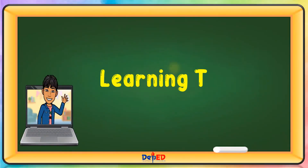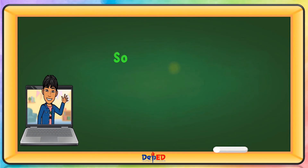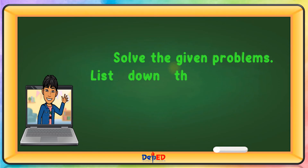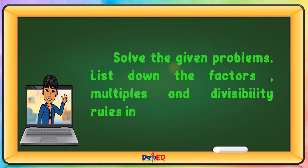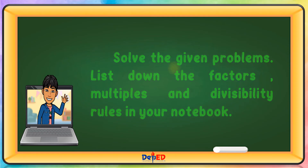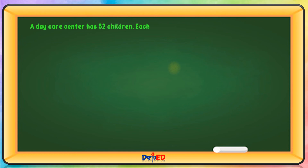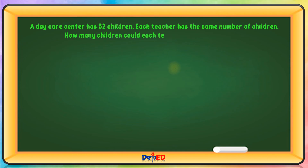Learning Task 3. Solve the given problems. List down the factors, multiples, and divisibility rules in your notebook. A daycare center has 52 children. Each teacher has the same number of children. How many children could each teacher at the center have?